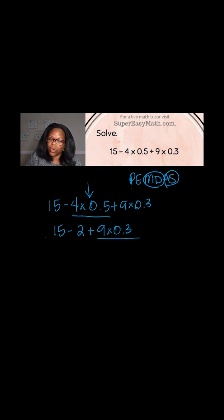So again, I'm going to rewrite this whole problem, except the underlined portion will be solved when I write it. So it's 15, which just comes down, minus the 2, then the plus sign, which just comes down. Now 9 times 0.3 is 2.7. So instead of writing that, I just wrote the answer to it.